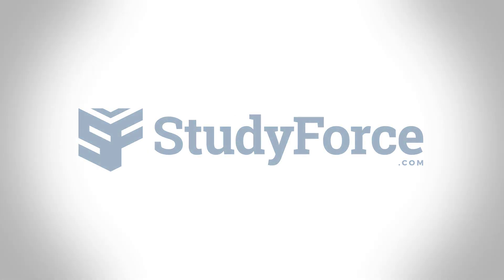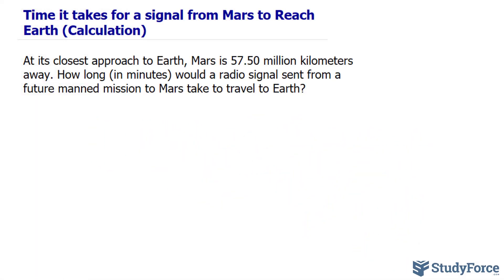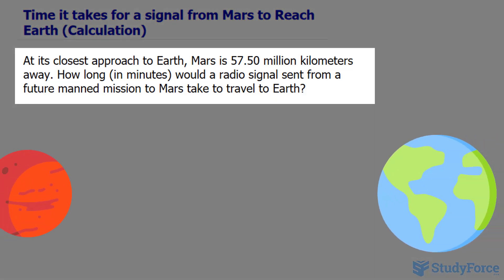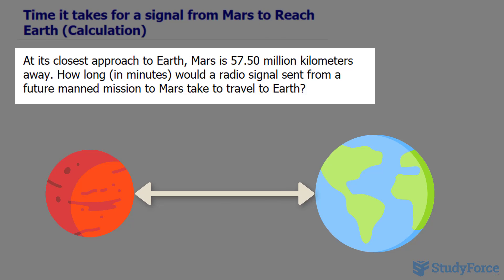In this quick lesson, I'll show you how to calculate the time it takes for a signal from Mars to reach Earth. The question reads: at its closest approach to Earth, Mars is 57.50 million kilometers away. How long, in minutes, would a radio signal sent from a future manned mission to Mars take to travel to Earth?